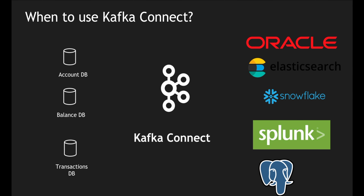Kafka Connect is basically a group of connectors — pre-built or even custom-built — using which you can configure the source and the destination, and it can transfer data from one particular data source to another. It copies all your messages from the account, balance, and transaction databases into a corresponding destination data source. You can connect to Snowflake, Splunk, Salesforce, IBM MQ, and many more.